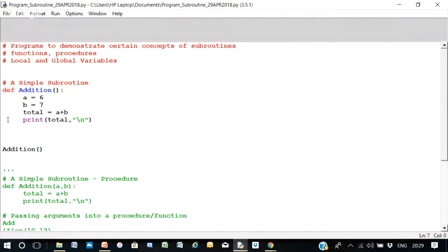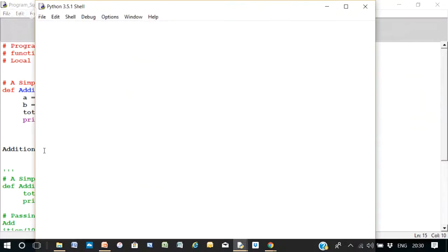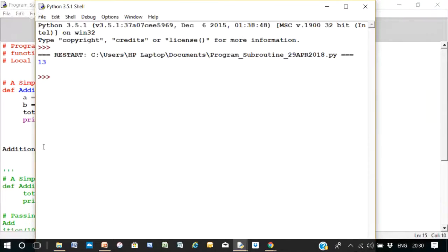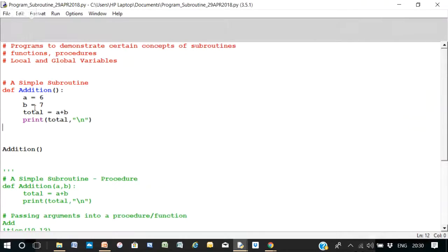And this is like an inert piece of code which has to be activated or called, and it's called by this line here, addition with brackets. So if I should run that, you can see it gives me the number 13. So that's like a simple subroutine there.